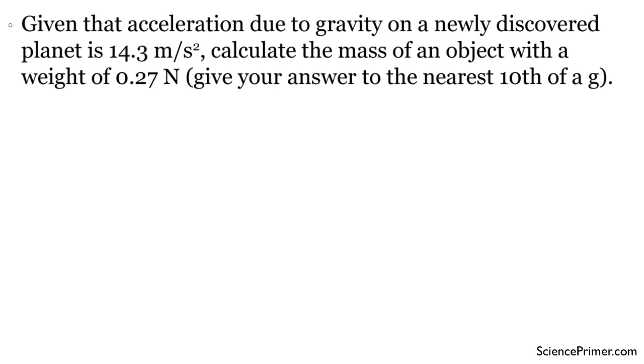This is an example solution to one of the problems in the mass, weight, and gravity problem set from SciencePrimer.com. This problem set provides questions in a couple of different formats. I'm just going to go through one right now. The one that I've chosen asks: Given that the acceleration due to gravity on a newly discovered planet is 14.3 meters per second squared, calculate the mass of an object with a weight of 0.27 newtons. And you're asked to give your answer to the nearest tenth of a gram.